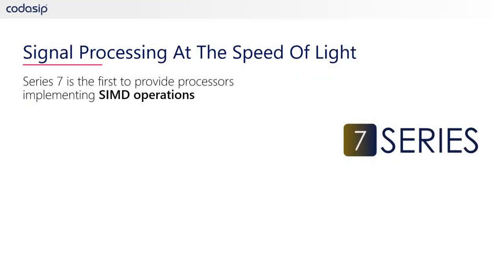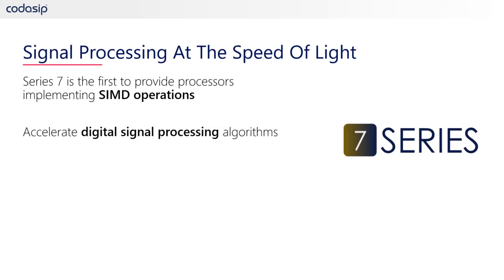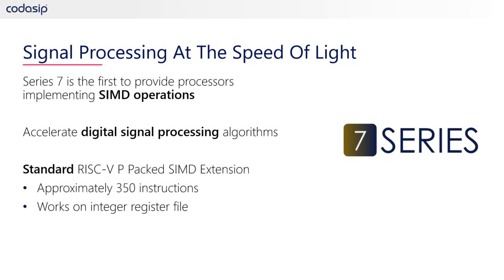Let me first tell you about the new DSP optimized solutions. The 7 series will be the first series in CodaSIP's RISC-V processor portfolio to contain processor cores capable of executing single instruction multiple data, or SIMD, operations with single cycle latency. Such operations are typically used to accelerate algorithms for audio encoding or decoding, sensor fusion, computer vision, and other digital signal processing. In CodaSIP RISC-V processors, the SIMD operations will be enabled through the standard RISC-V P extension, which stands for packed SIMD. The first processor to implement the P extension in our portfolio will be the A70XP.